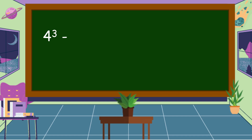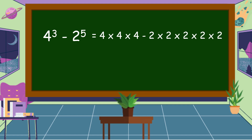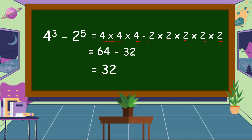Next example: 4 cubed minus 2 to the power of 5. This means 4 times 4 times 4, minus 2 times 2 times 2 times 2 times 2. So 4 times 4 is equal to 16, and 16 times 4 is equal to 64. Minus: 2 times 2 is equal to 4, times 2 is equal to 8, times 2 is equal to 16, times 2 is equal to 32. So 2 to the fifth power is equal to 32. Therefore, 64 minus 32 is equal to 32.